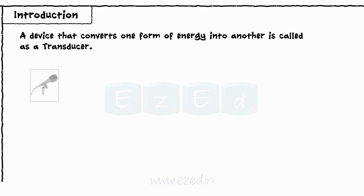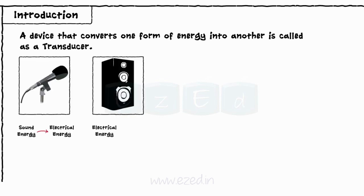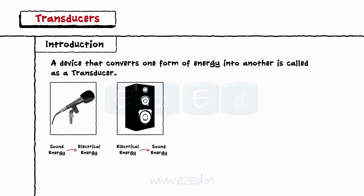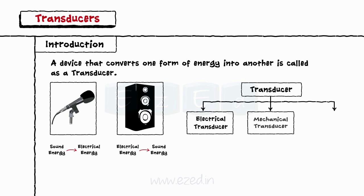Thus, microphone — sound to electrical — and speaker — electrical to sound — are the two examples of a transducer. Depending on the principle of operation, transducers can be classified into basic types such as electrical transducer, mechanical transducer, thermal transducer, etc.